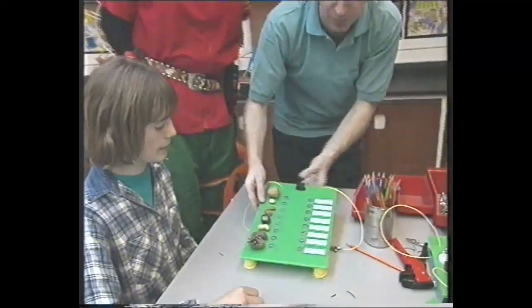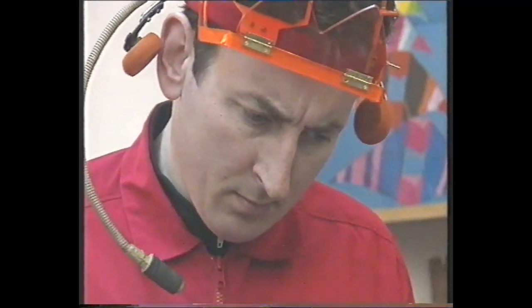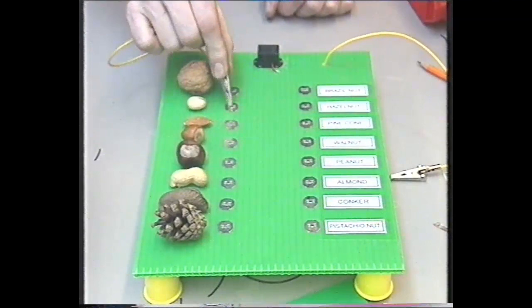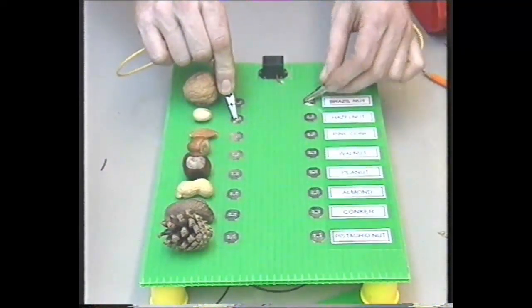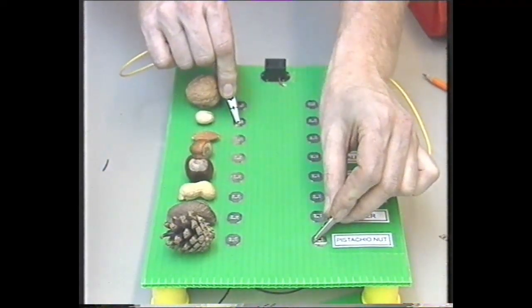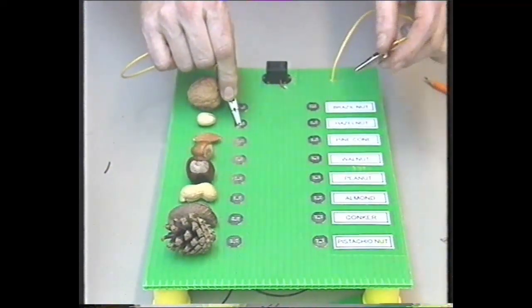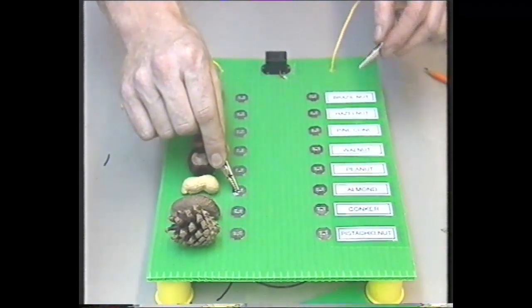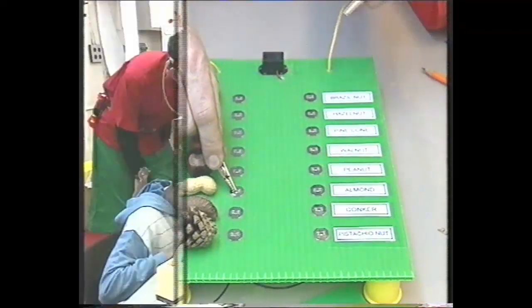So now we've got to think up some questions and answers that link up. For this one, we've got some different kinds of nuts here, but of course they're all mixed up. So let's try and find out what this one here is. We hold the wire onto its paper fastener. Let's work our way down. No, no, it's none of these. Ah, it's a pistachio nut. And each of the others, let's find out what this one is. I reckon that might be a peanut. Yes, I'm right.